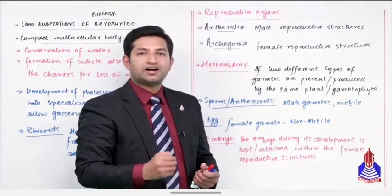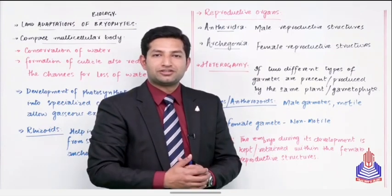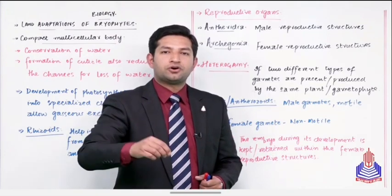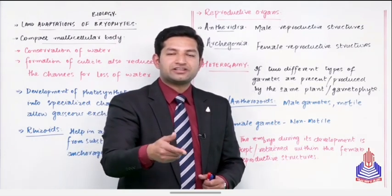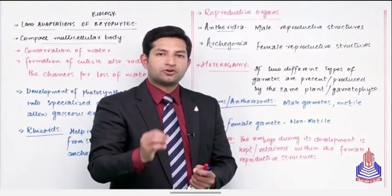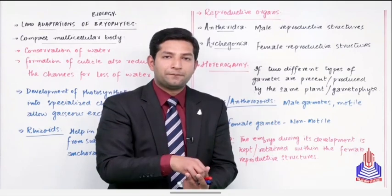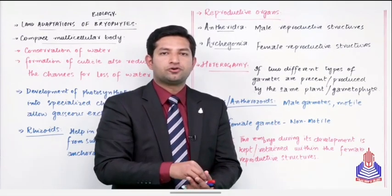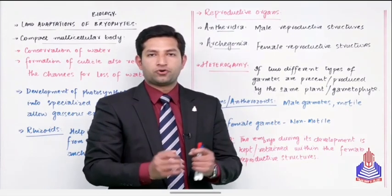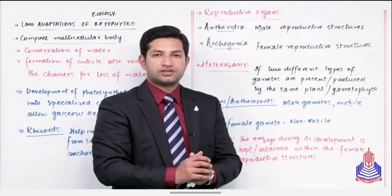When cell division begins in the zygote, a multi-cellular structure will form, and we'll call this multi-cellular structure the embryo. Now this embryo that is forming will not be separated or detached and sent somewhere else. Rather, this embryo forming on top of the gametophyte, it will stay embedded. Then from this, the next generation will begin, that is the sporophyte generation.